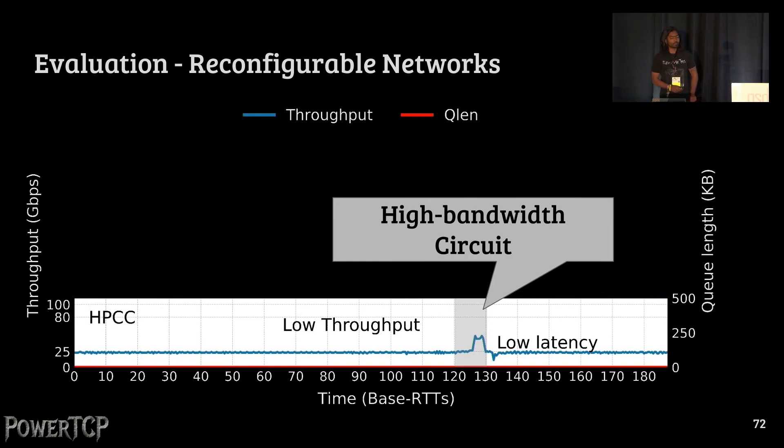So, given the accurate control of PowerTCP, we also evaluated it in the reconfigurable network setup. Here, on the x-axis, we show time, and on the y-axis is both throughput in blue and queue length shown in red color. The goal here is that in this shaded region is where the topology reconfigures to a high bandwidth circuit region, and the goal here is to quickly utilize the high bandwidth circuit leading to high throughput without incurring additional latency. Here, first we show how HPCC performs. What we see is that HPCC indeed maintains low latency, but it's unable to fill the high bandwidth circuit as quickly as possible, resulting in low latency, low throughput.